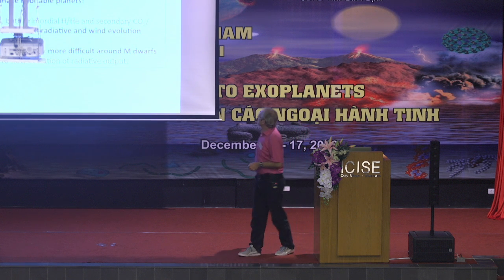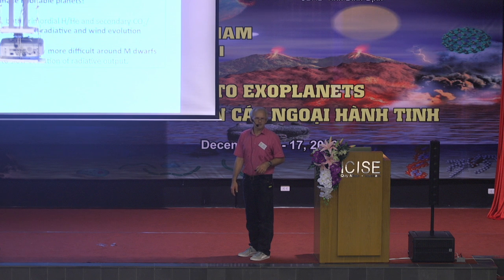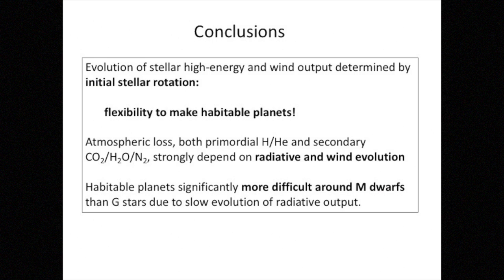My conclusions. It does matter how the star evolves and actually what the initial conditions of the star are. That's very important to investigate, to develop a planet, to make it habitable in the end. It's also an advantage because nature adds flexibility. There's not only one path of a star and a planet to make the planet habitable. There are lots of options and this option adds freedom. We don't know which option is the right one to make a habitable planet. This is still research to be done. So, radiative and wind evolution matters and we've seen the problems with M dwarfs because of their very slow evolution.